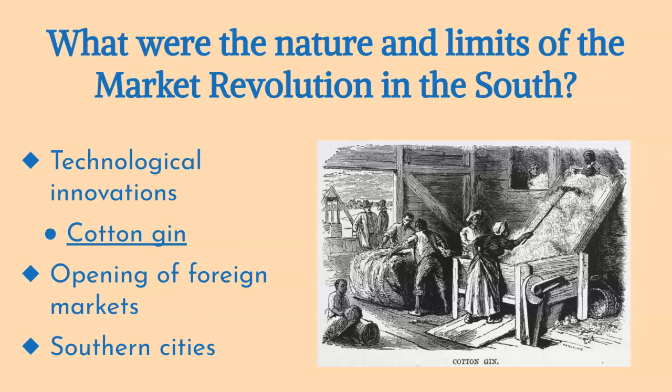In sum, the market revolution in the South was shaped by its focus on cotton production and slavery, leading to economic growth that was narrowly concentrated among the planter elite. The region's failure to diversify its economy and invest in infrastructure improvements limited the broader impact of the revolution and kept the South reliant on cotton and slavery well into the 19th century.